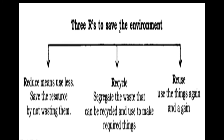There are three R's to save the environment: Reduce, Recycle, and Reuse. Reduce means use less — save the resource by not wasting it. Recycle means segregate waste that can be recycled and used to make required things. Reuse means use things again and again. This will help us save the environment, because we have to save natural resources for our future generations since they have the right to use them just like us.